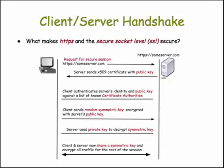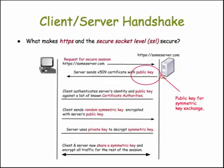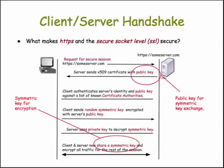Why do they use both public key and symmetric keys in this handshake? The reason is that they use the public key for exchanging the symmetric key, but they use the symmetric key for the actual encryption of the data being sent back and forth. This is simply because symmetric key cryptography is much more efficient than public key cryptography, which saves time in terms of the traffic that goes back and forth between the client and the server.